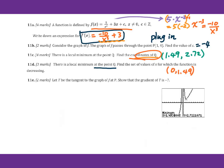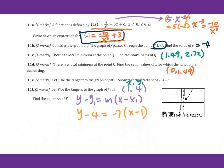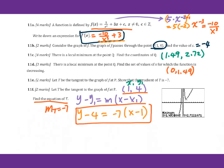For 11e, let t be the tangent line at point P. Show that the gradient of t is negative 7. Point P is at 1, 4. So the gradient means the derivative of f of x. Now with x equals 1, we get f prime of 1 — we plug into the derivative function and you will get negative 7. For 11f, we want to find the equation of t. We know the slope of the tangent line equals negative 7. Then x1, y1 is 1, 4. So we plug into the formula — this will be the answer.